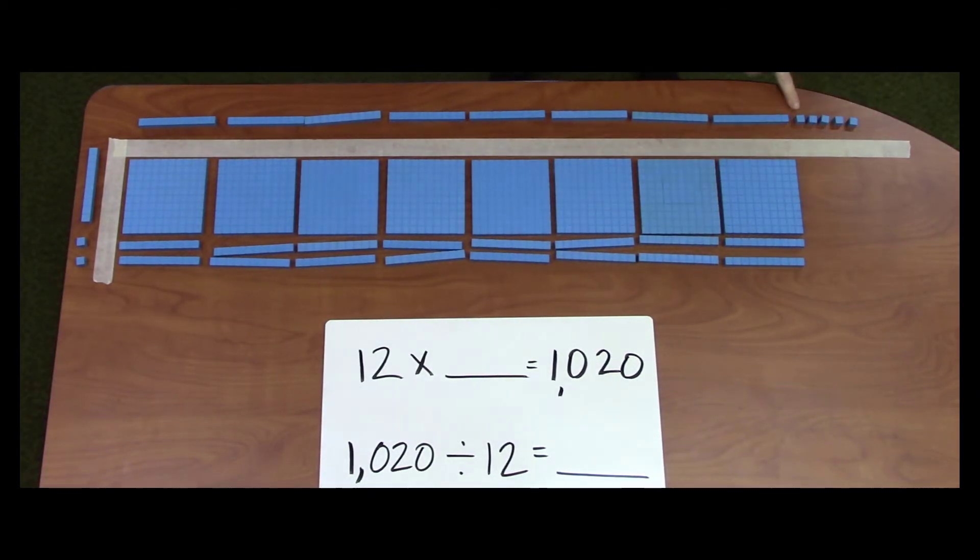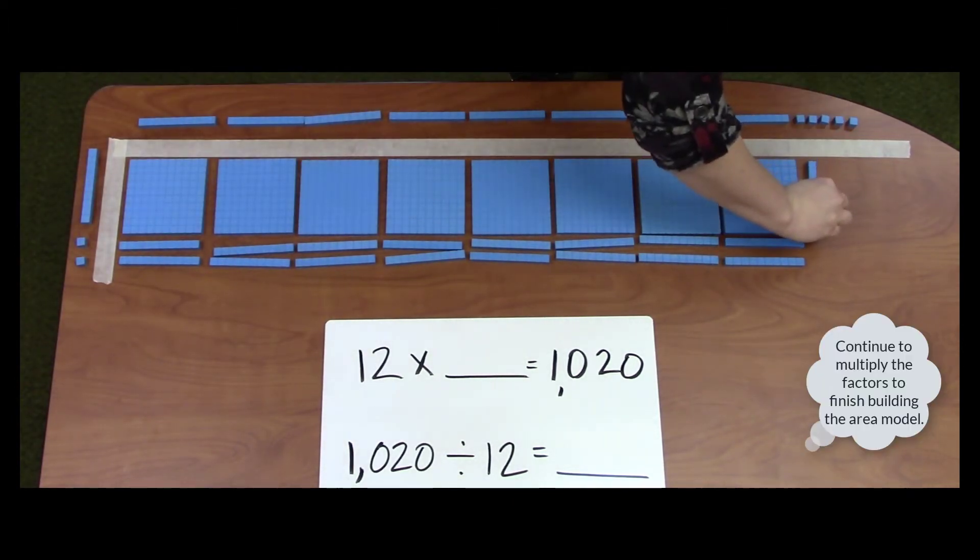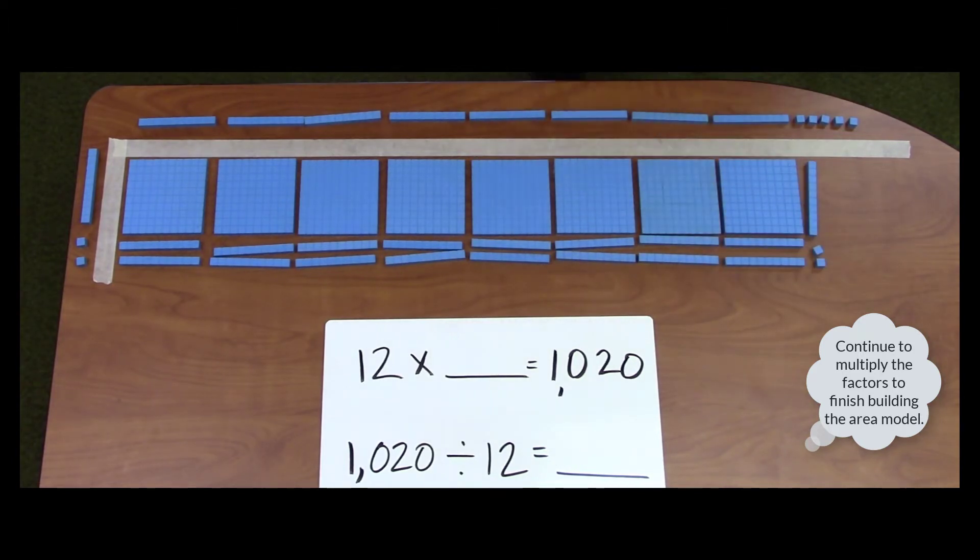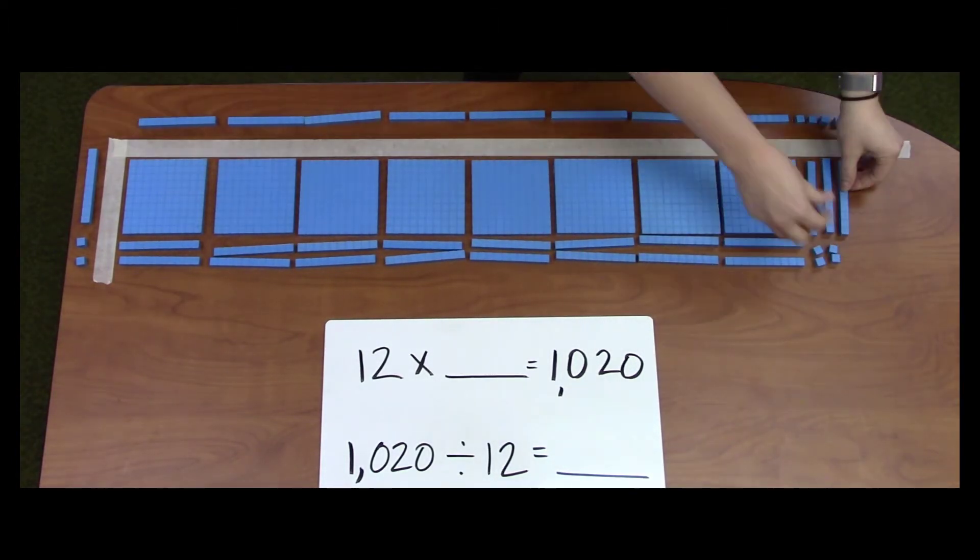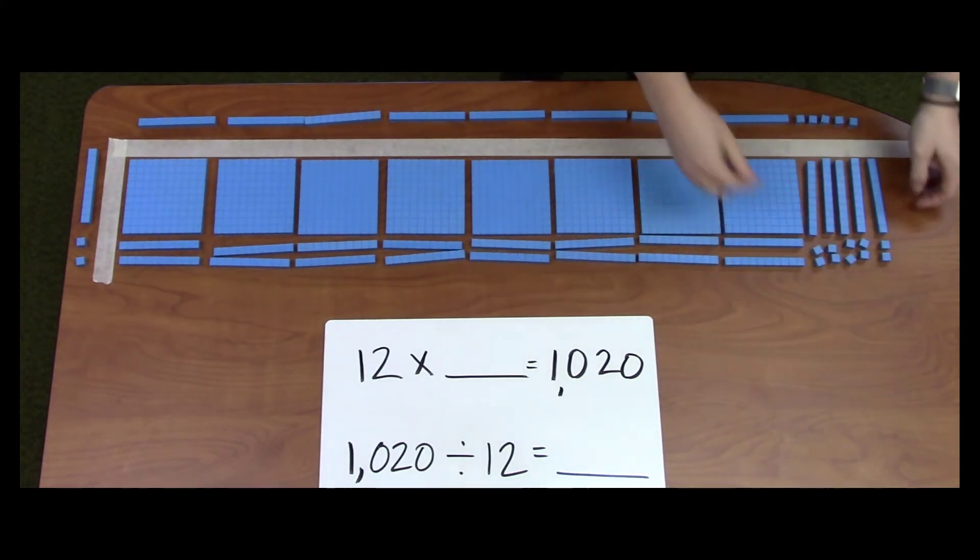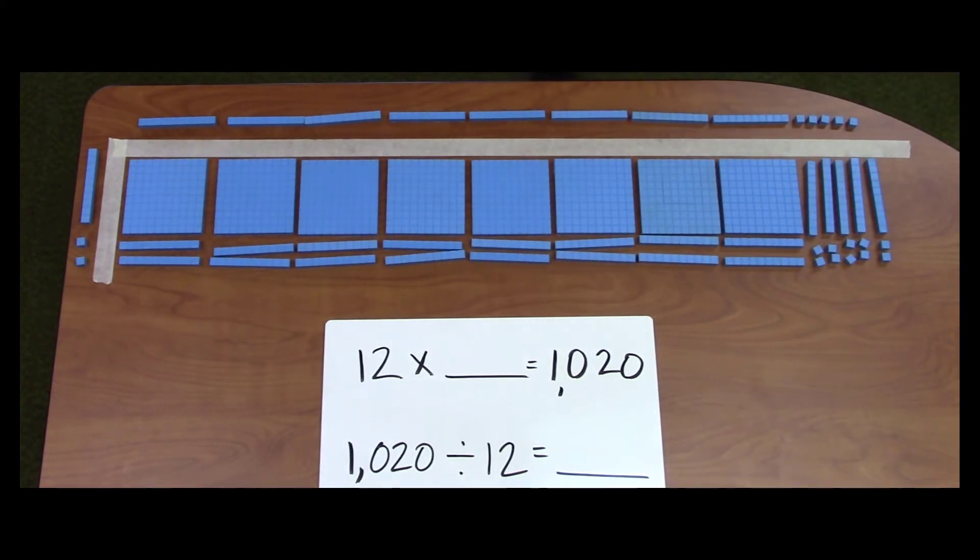So, 1 times 12 equals 12. I now have my final group of 60.